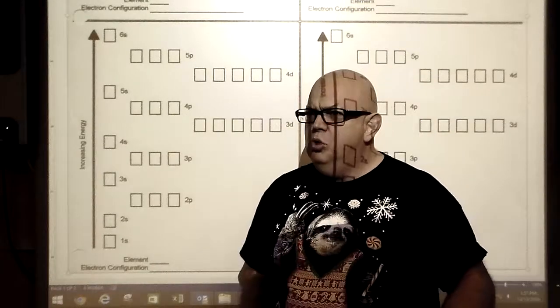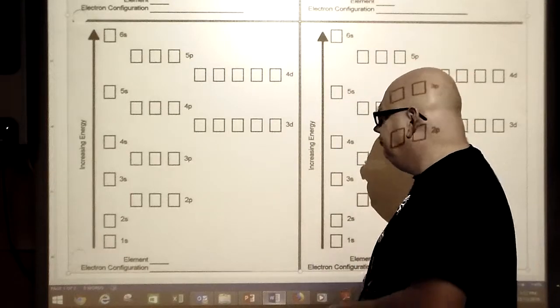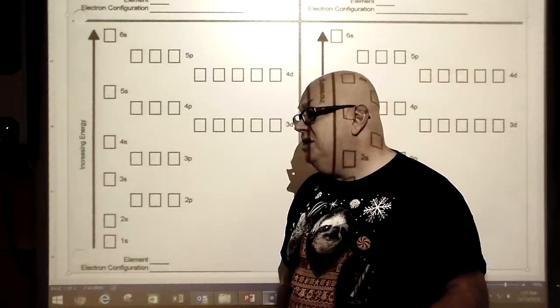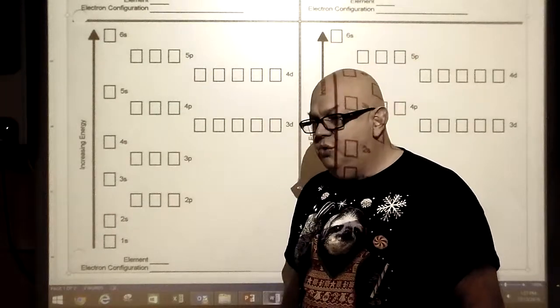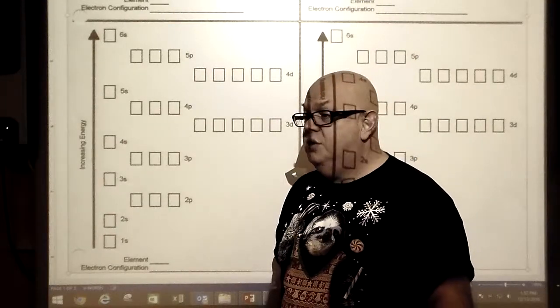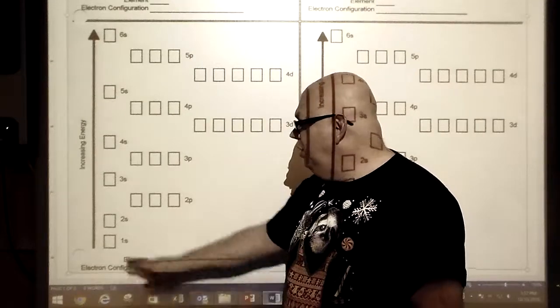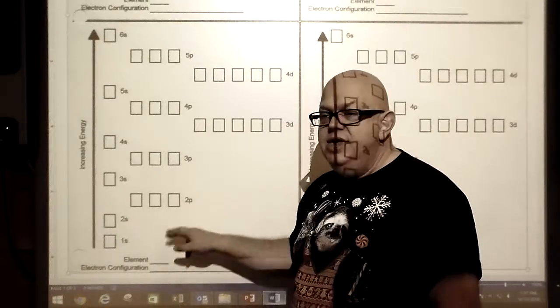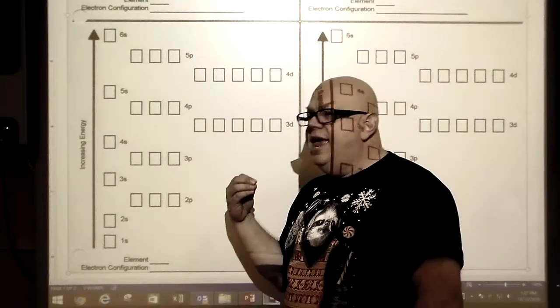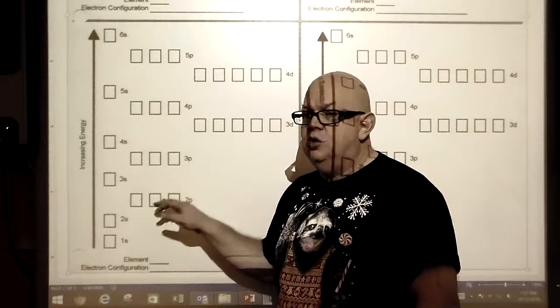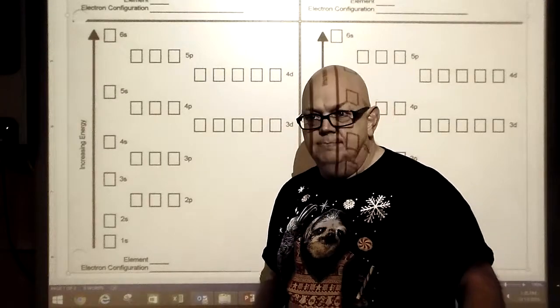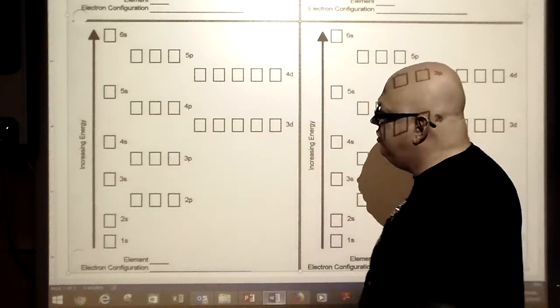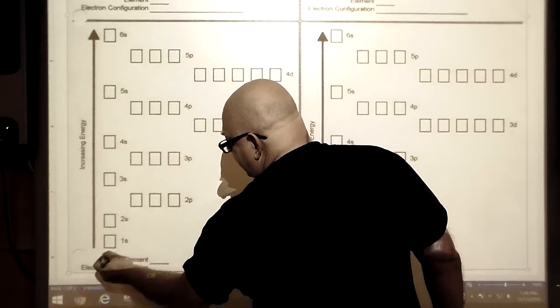When we talk about Werner Heisenberg's uncertainty principle, he says there's no way to predict where the electron's going to be and how much energy it's going to have. These boxes are areas that exist only when the electron is inside there.